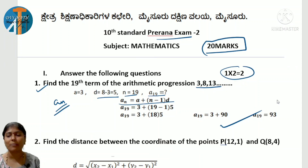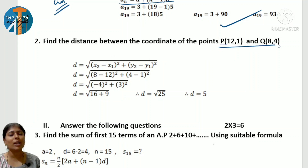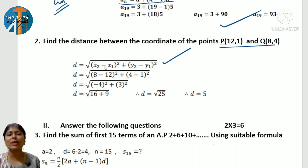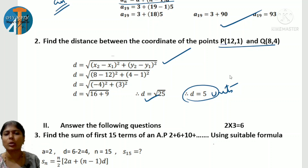Next, the second question: find the distance between the points P(12, 1) and Q(8, 4). The distance formula is to be used. Apply: √[(x2−x1)² + (y2−y1)²]. Substituting: √[(8−12)² + (4−1)²] = √[(-4)² + 3²] = √[16 + 9] = √25 = 5 units. This is the answer for the 1-mark question.